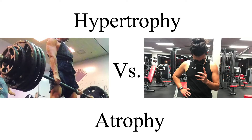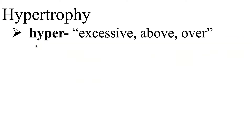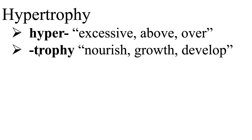Today we're going to cover the difference between hypertrophy and atrophy. The very first one we're going to cover is hypertrophy. The prefix hyper means excessive, above, or over. Trophy means nourish, growth, or development. Hypertrophy then is an excess in muscle growth or development.